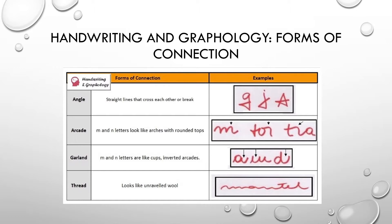Okay, so based on those four words you chose - angle, arcade, garland, or thread - now we can form connections. For this next section, again, look at the choices and pick one for each square.